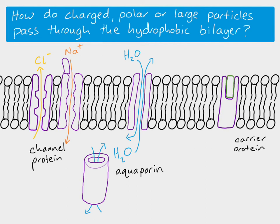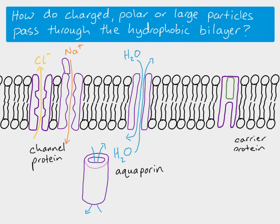When a molecule binds to a carrier protein, it causes a change in the shape of the protein. This could represent a glucose molecule — it tends to be bigger molecules that use carrier proteins. The protein is open on one side of the membrane so the glucose can bind, but the other side is closed. When glucose binds, it causes a change in shape and the other side of the carrier protein opens, allowing the molecule to move through. It's called a carrier protein because it changes shape and therefore carries the molecule across.